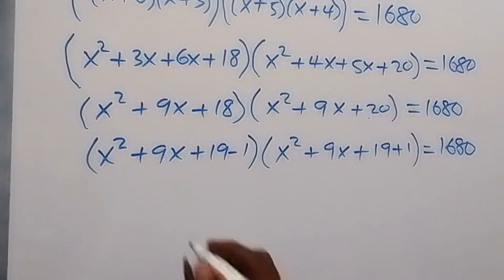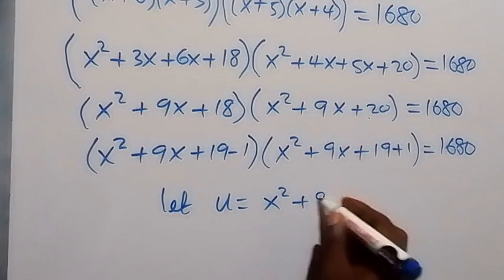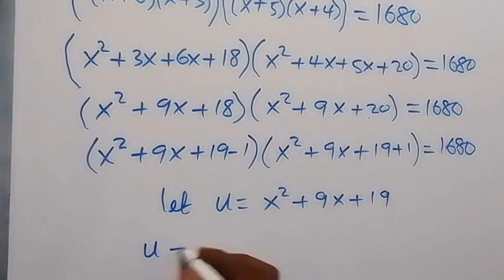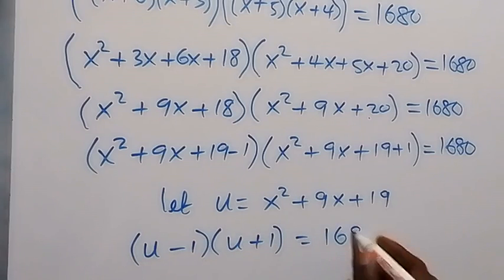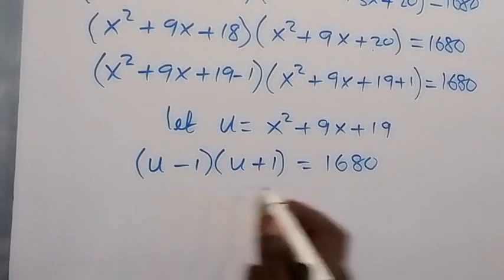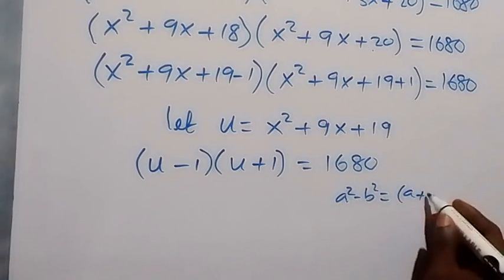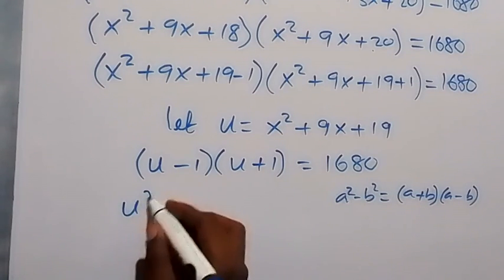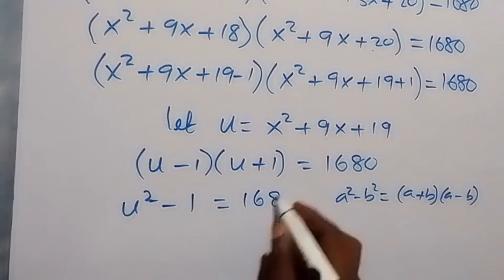Let u = x² + 9x + 19. Then we have (u − 1)(u + 1) = 1680. This follows the difference of two squares: a² − b² = (a + b)(a − b), so we write u² − 1 = 1680.